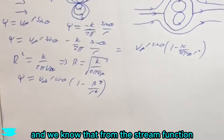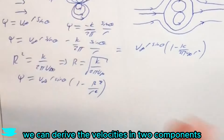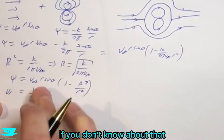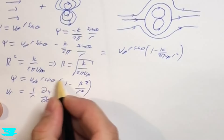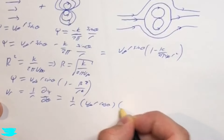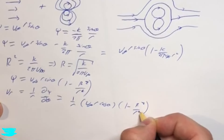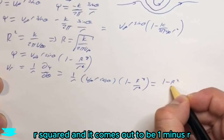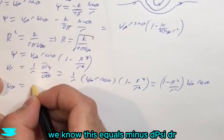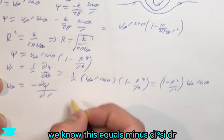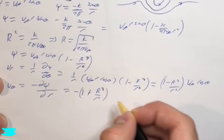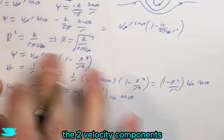We know that from the stream function we can derive the two velocity components: the radial component vr and the tangential component vθ. So vr = (1/r) · ∂ψ/∂θ — see the linked video for details — and substituting our equation in gives vr = v∞ · cosθ · (1 − R²/r²). For vθ, we get vθ = −v∞ · sinθ · (1 + R²/r²).